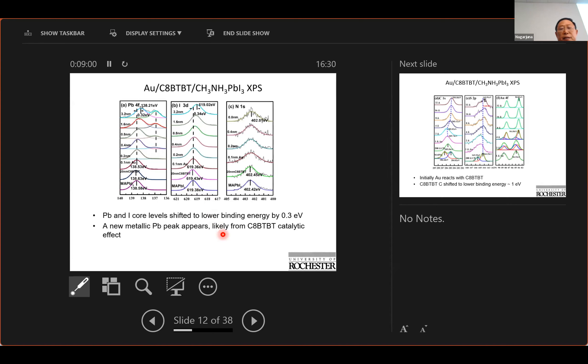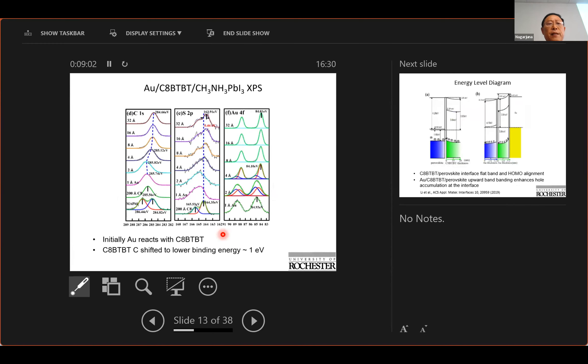In this case it's limited but existing. We can also look at other materials for example look at the carbon due to CABTBT and sulfur and we see also shift to lower binding energy by one eV so that's in addition to about 0.3 eV shift in the perovskite substrate.